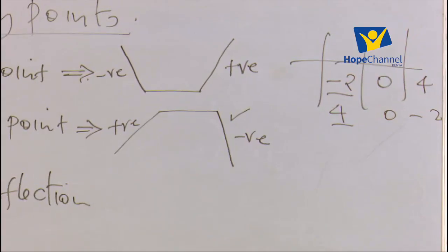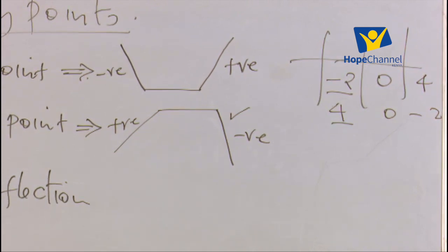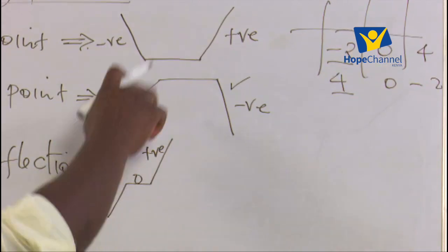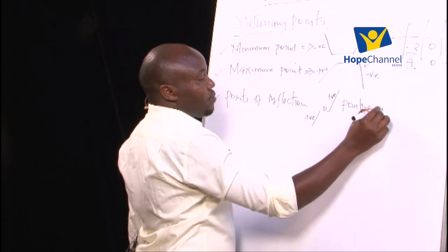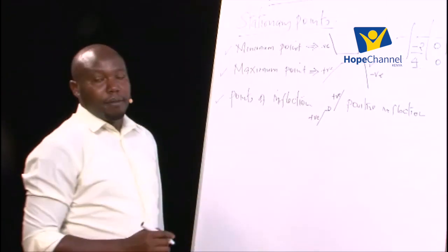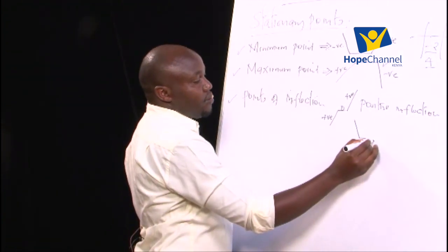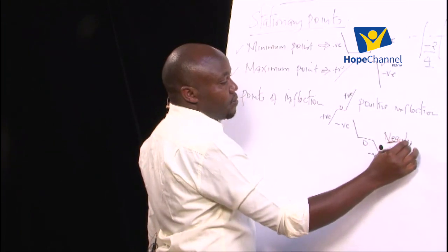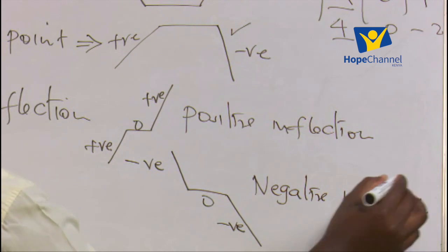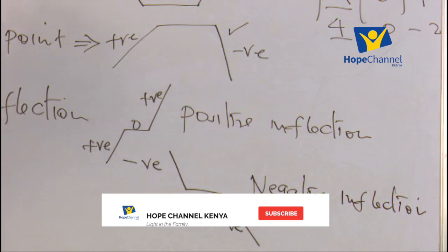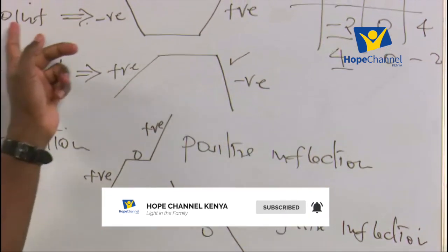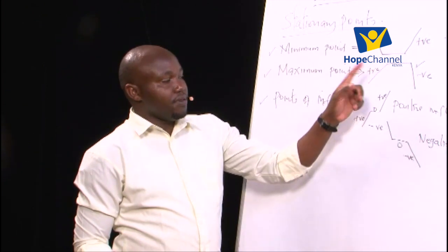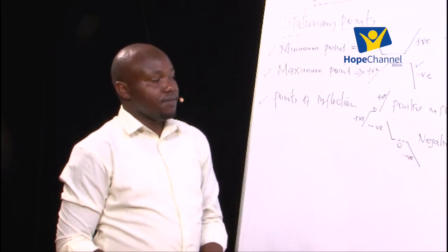For points of inflection, there are two types: positive inflection and negative inflection. For positive inflection: the signs are positive, zero, positive — both sides positive. For negative inflection: the signs are negative, zero, negative — all negative. So to summarise: negative–zero–positive is minimum; positive–zero–negative is maximum; positive–zero–positive is positive inflection; negative–zero–negative is negative inflection.